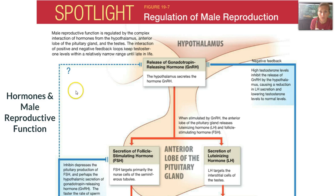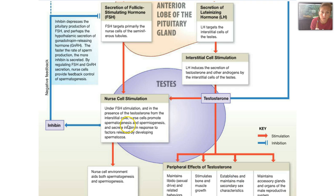The hormones involved are very important. The hypothalamus, pituitary gland, and testes all work together to produce these hormones. The hypothalamus releases gonadotropin-releasing hormone, or GnRH. GnRH stimulates secretion of FSH, or follicle-stimulating hormone, and LH, or luteinizing hormone. FSH targets primarily nurse cells and LH targets the interstitial cells of the testes. Under FSH stimulation, nurse cells help spermatogenesis occur. LH induces secretion of testosterone and other androgens by the interstitial cells. Testosterone maintains libido, stimulates bone and muscle growth, establishes and maintains male secondary sex characteristics, and maintains the accessory glands and organs.